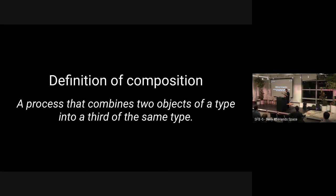The definition we'll start with is super simple: a process that combines two objects of a type into another object of that same type. We're already in a bit of trouble here because we're using two undefined terms — 'object' and 'process' — but people have intuition for both of those. So we'll go with this loose definition since we can't use the hardcore mathematical definition.